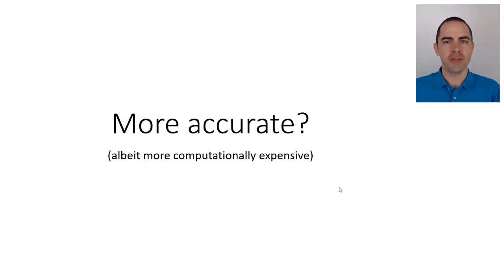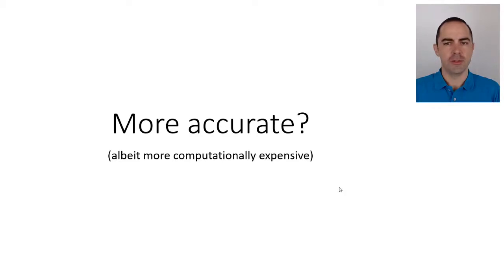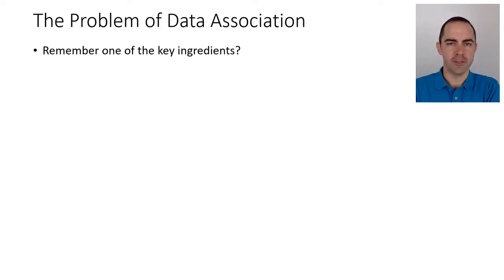In this tracker, let's try to see if we can devise a more accurate one than the last one we've seen from motion compensated event features. For that, let's review the problem of data association.